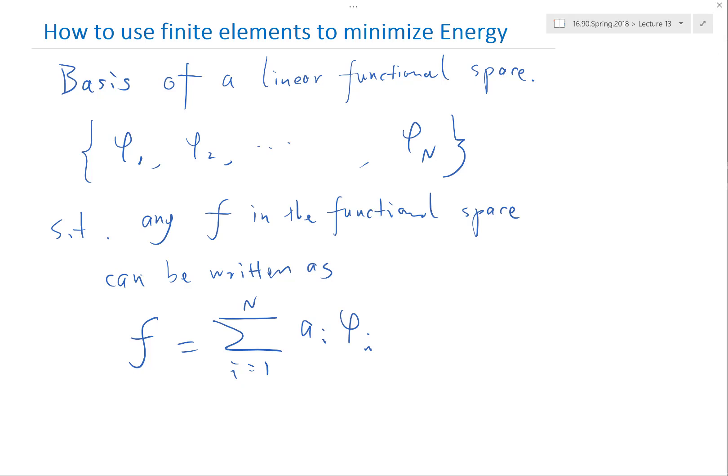It's the same definition as in linear algebra, except if you started linear algebra in a more restrictive sense. Here the linear space is a space of functions as opposed to a space of vectors. And this linear functional space has to satisfy just the typical properties of a linear space. For example, if you have F in the linear functional space, 2F also has to be in the linear functional space. If you have F and G in the same functional space, F plus G also has to be in the same linear functional space.